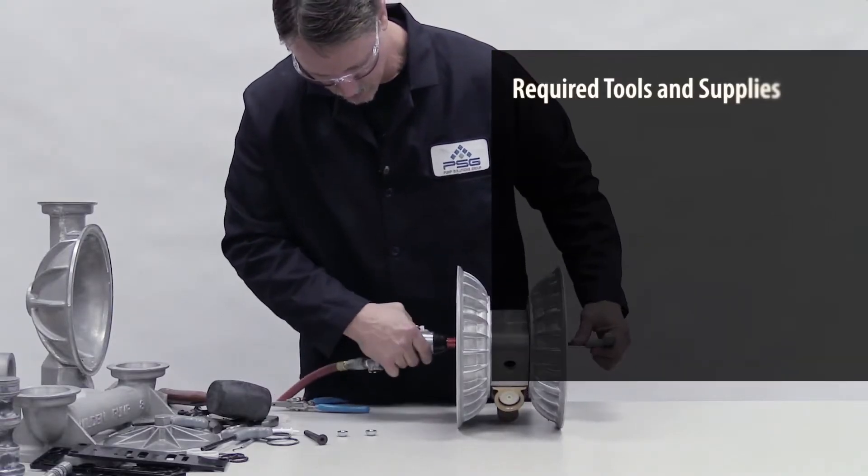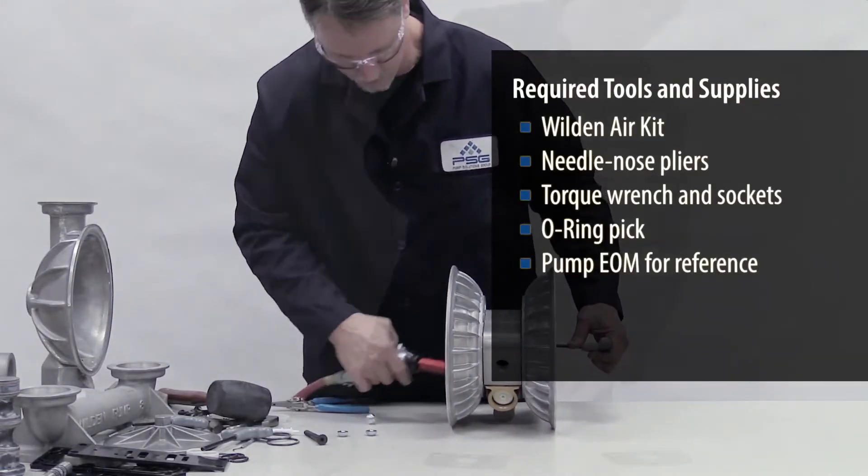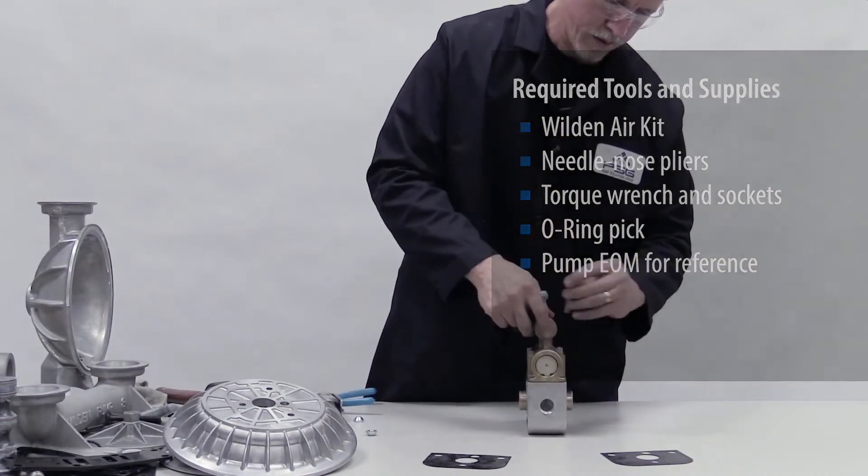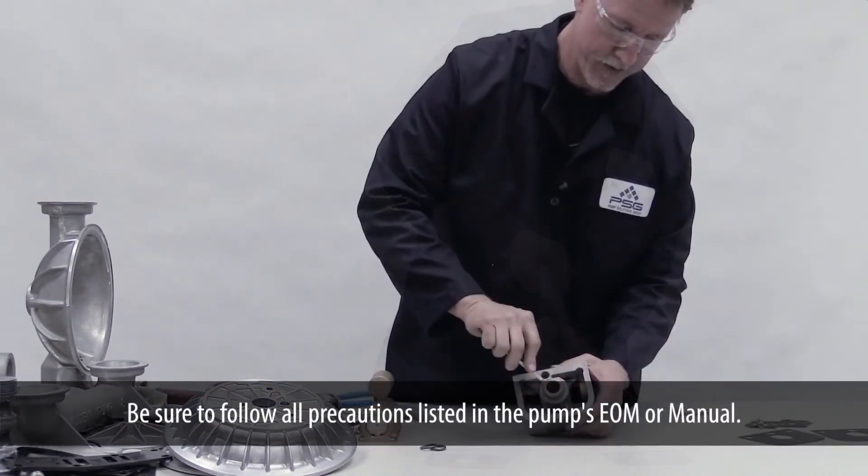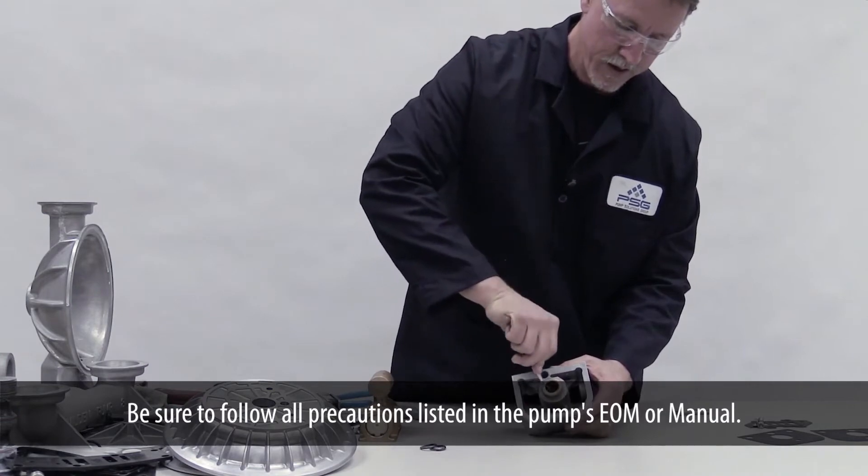First, completely disassemble the ADS including glide rings, air valve gaskets, and screws. Be sure to follow all precautions listed in the pump's EOM or manual.